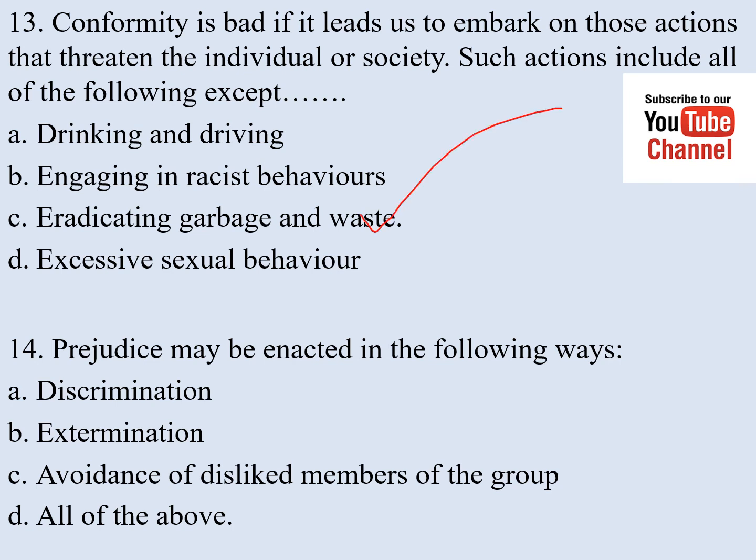Number fourteen. Prejudices may be enacted in the following ways: a) discrimination, b) extermination, c) avoidance of disliked members of the group, d) all of the above. The correct answer is d.